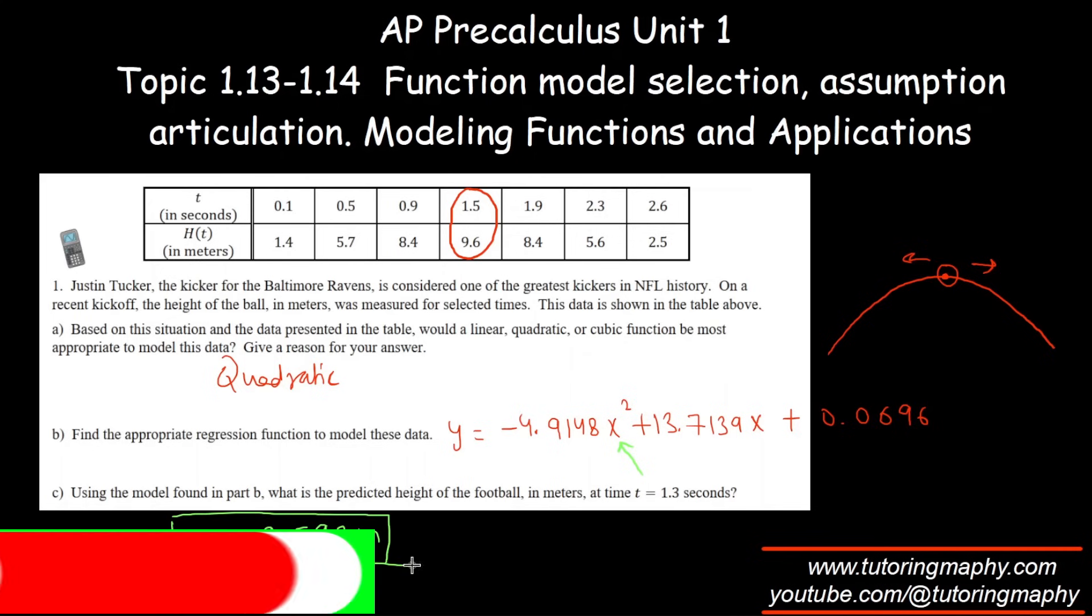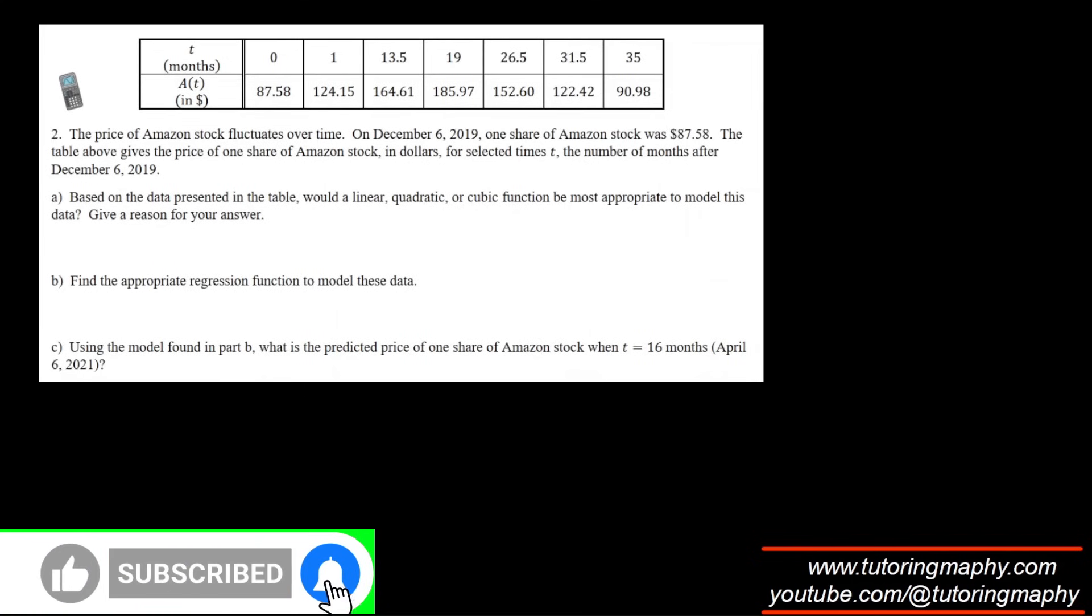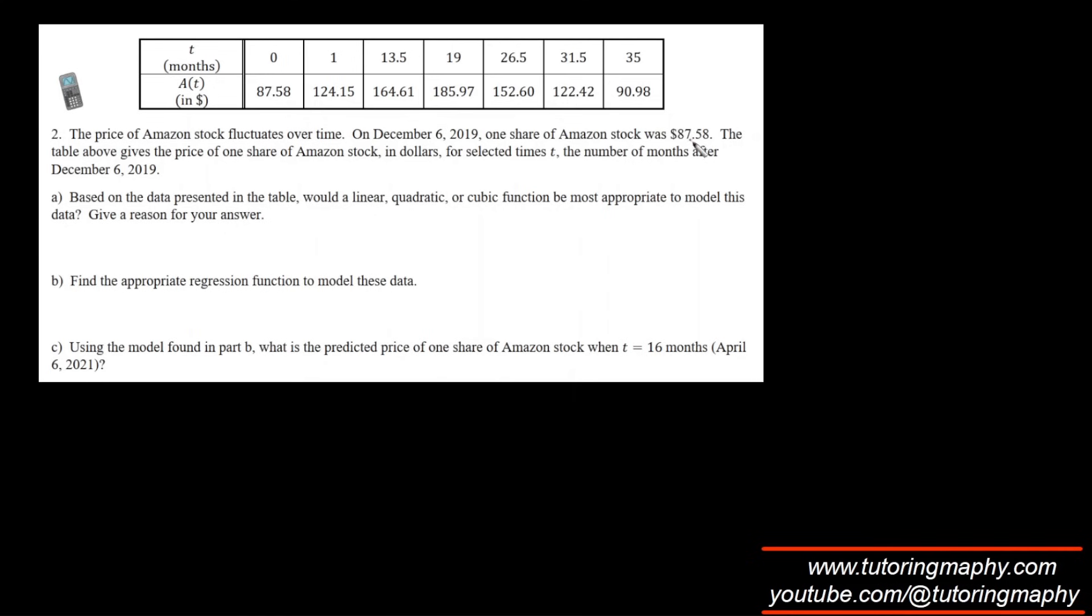The price of Amazon stock fluctuates over time. On December 6th, 2019, one share of Amazon stock was at $87.58, and then selected times show the number of months after and the value of the stock. Based on the data presented, would a linear, quadratic, or cubic be most appropriate? The same logic follows here because it starts off at 87, then 124, 164, 185, that's where it sort of hits a peak, and then it starts going down: 152, 122, 90. Definitely cannot be linear, and it has to be quadratic.